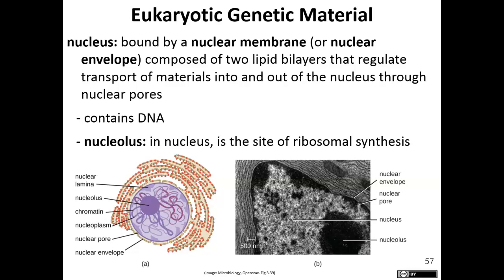All eukaryotic cells have a nucleus, and that nucleus has a nuclear membrane surrounding it that has small structures called nuclear pores. These pores allow materials to move in and out of the nucleus. Within the nucleus, the DNA is held.